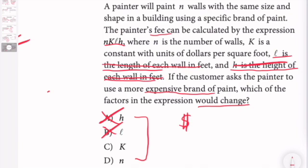Now K is a constant with units of dollars - okay, that seems interesting - per square foot. Yeah, that would change because if we're using a more expensive brand of paint, this would increase.